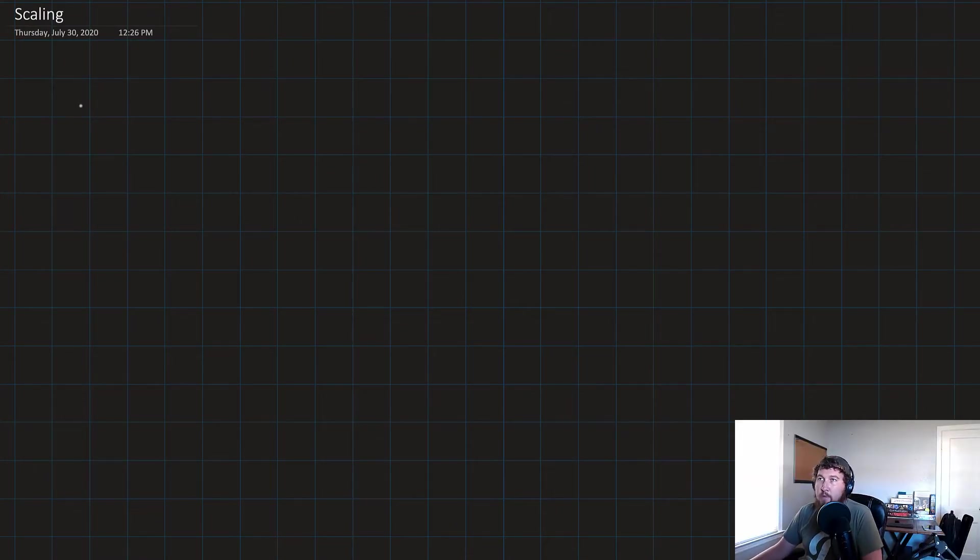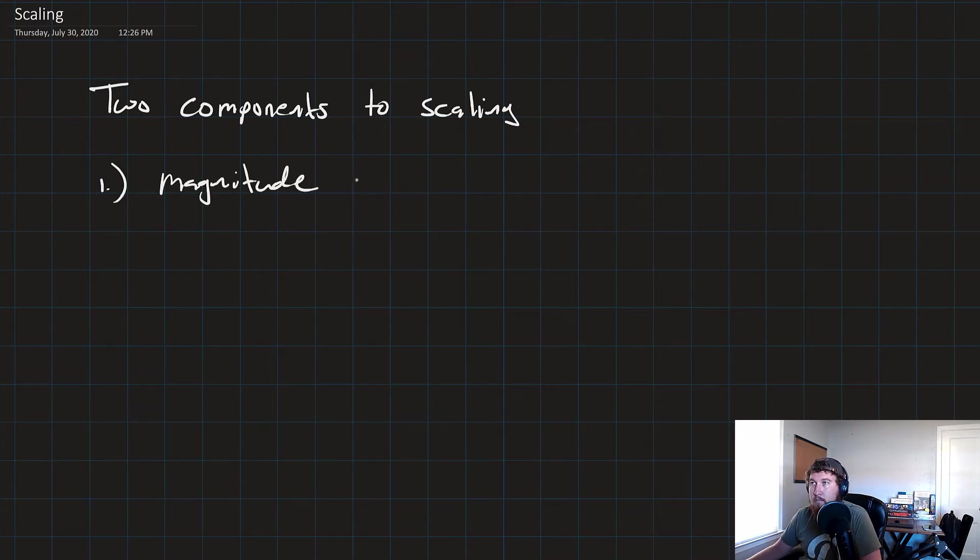So there are two components to scaling. The first is called magnitude scaling. And we can break it out into three components, or three pieces here. For resistors, to get our scaled resistance, we'll just do what we call the scaling constant for magnitude, Km, times the original value of the resistor.